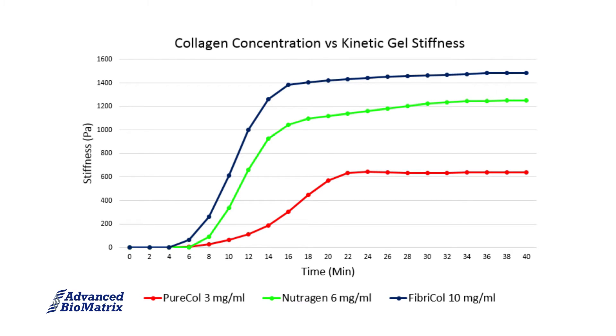All three are type 1 bovine collagen but at different concentrations. As you can see, the higher collagen concentration leads to faster gel onset times and stiffer gels.